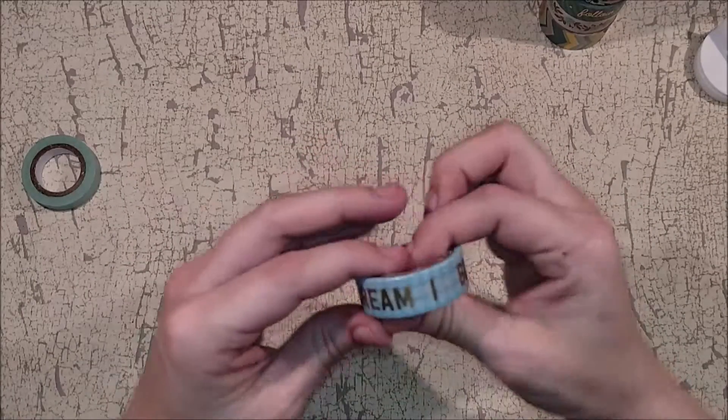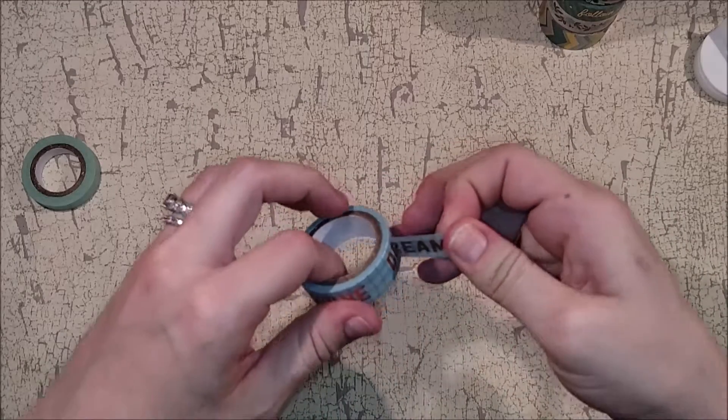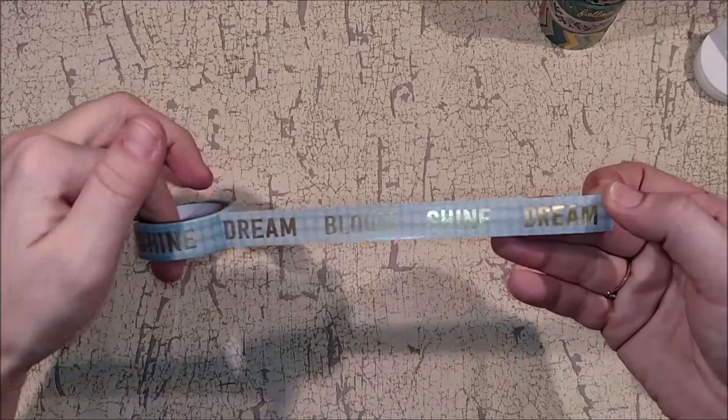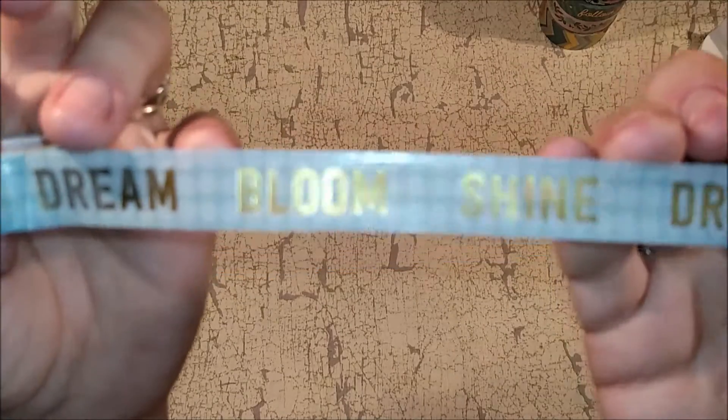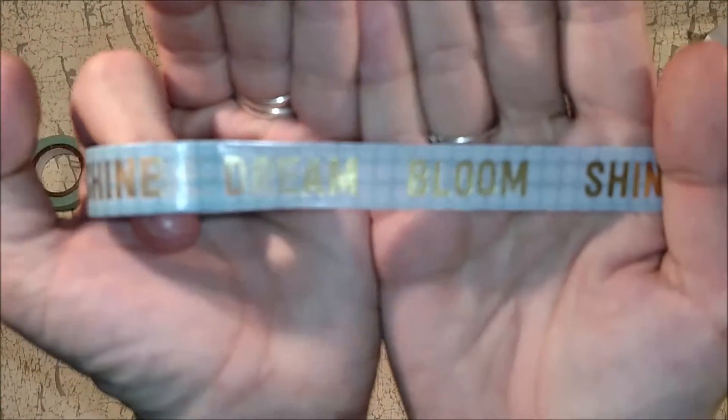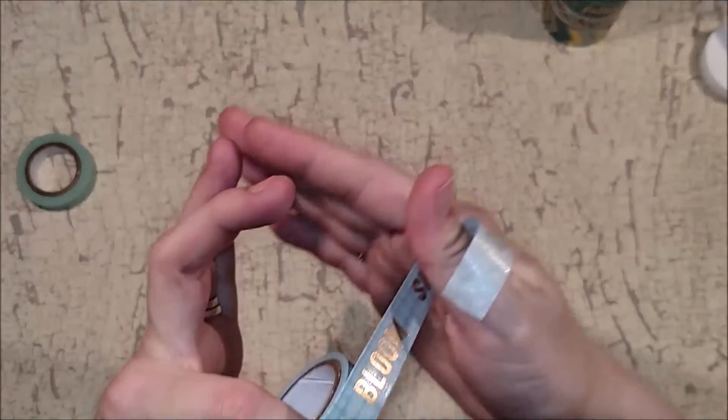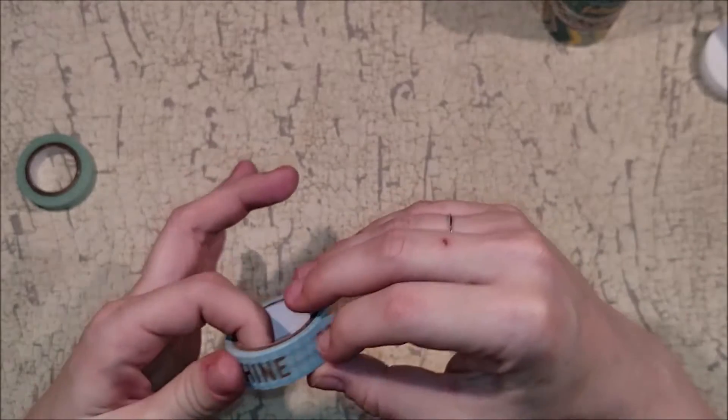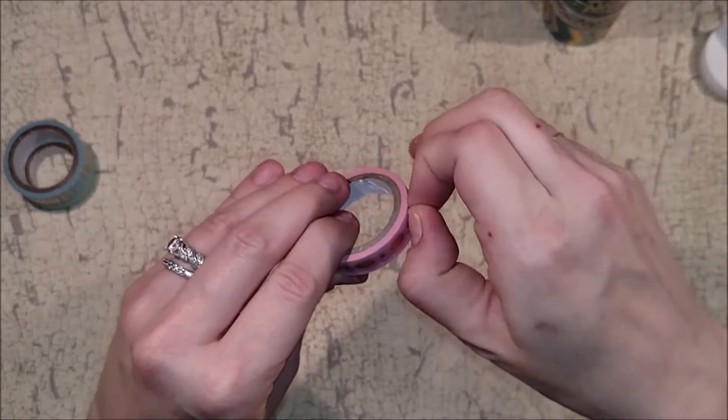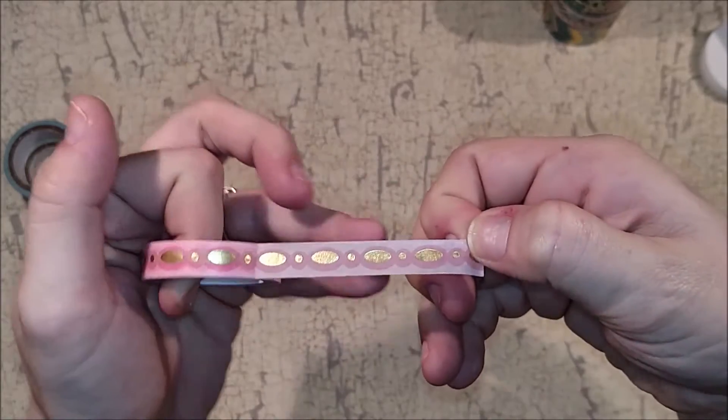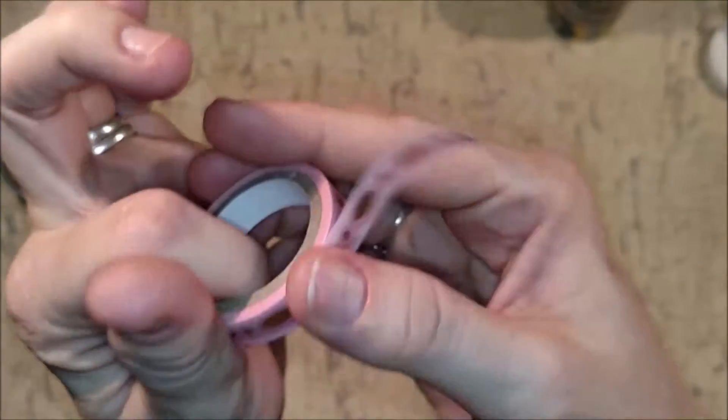This one here just says a bunch of different things on this pretty blue. And this tape is a little slicker than normal. But it says Dream Bloom Shine. So, there we go. Dream Bloom Shine. It's always so much fun to show washi. And then this one is a really cute little pink one with foiling on it as well. And it has, like, this little detail of two-tone pink.